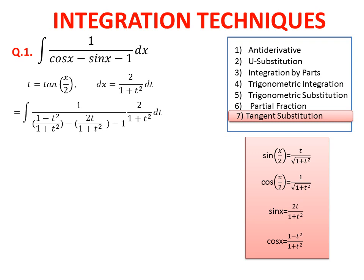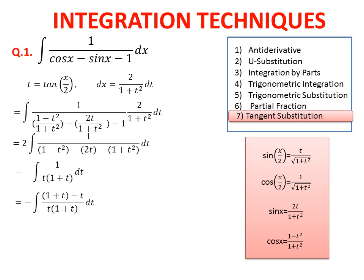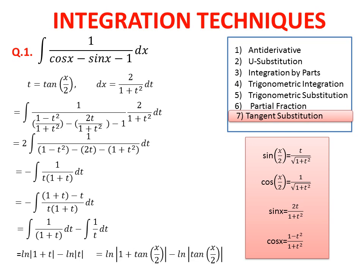Plugging in cos x, sin x, and dx, we get a new expression. In the denominator we have 1 + t² with dt. Multiplying through and taking 2 outside, we simplify further. It now looks like an ordinary partial fraction. By adding and subtracting t, we split it into simple integrals, both giving answers in terms of the ln function: ln(1 + t) minus ln(t). Replugging t = tan(x/2) gives the final answer.